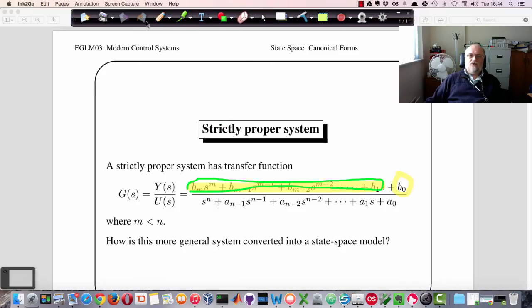This type of system is called strictly proper. Strictly proper because the order of the numerator polynomial is less than the order of the denominator polynomial. And so what we get is essentially a strictly proper fraction, if you want to look at it in that way.